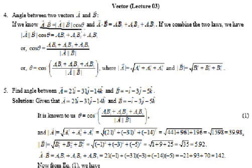The dot product formula: a·b is equal to the magnitude of a times the magnitude of b times cos theta. Then we will have a·b is equal to a1, b1, a2, b2, a3 vector — the component form.